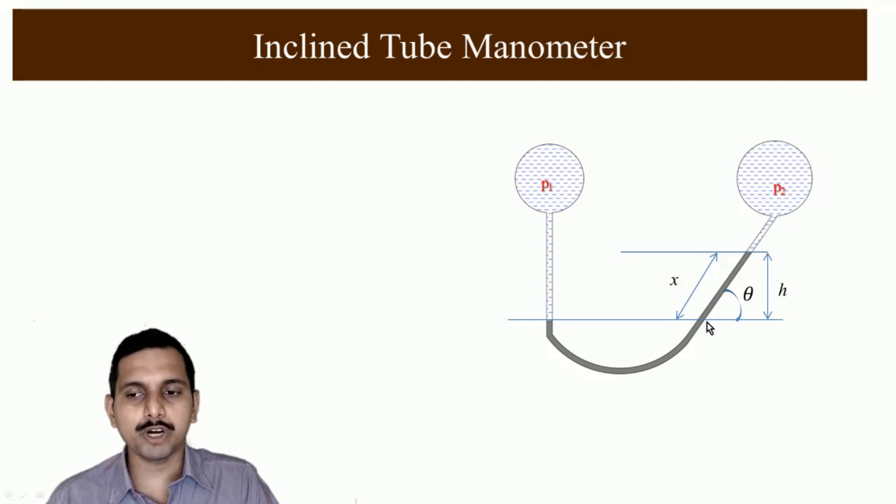One of the problems what we see here is meniscus level. If the h goes in terms of millimeters then we do not know where in the meniscus we have to take the height. Whether we have to take the top of the meniscus, bottom of the meniscus or middle of the meniscus. But when we tilt it, the meniscus becomes much much shorter because the length increases here. This length increases as well as this length increases. So what happens, we get more accurate reading using this.